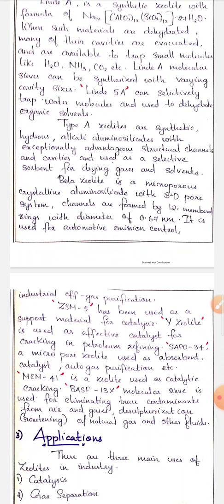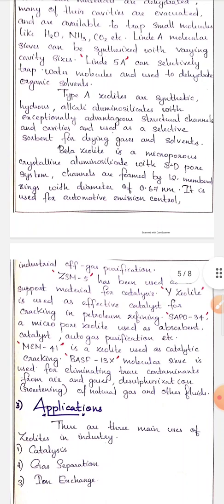ZSM-5 has been used as a support material for catalysis. Y-zeolite is used as an effective catalyst for cracking in petroleum refining. SAPO-34 is also another zeolite. Micropore zeolite is used as an absorbent, catalyst, autogas purification, etc. MCM-41 is also zeolite used for catalytic cracking. And one of the important zeolites, BASF-13X, is a molecular sieve used for eliminating trace contaminants from air and gases, desulfurization of natural gas, or sweetening of natural gas and other fluids.